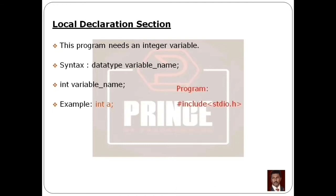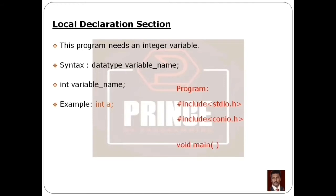To summarize the program structure so far: the preprocessor section includes stdio.h and conio.h header files. Then the global declaration section. Then the main function with void main and left curly brace. Then the local declaration section with the integer variable declared.